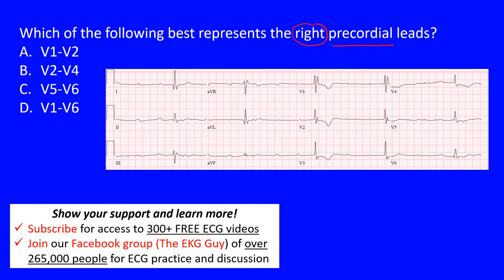Here we have a standard 12-lead ECG minus the rhythm strip, which you often see at the bottom. On the left side we have our limb leads, and on the right side we have our precordial leads. So we already know the answer will be on the right side — but since choices A through D are all on the right side, we need to narrow it down further.